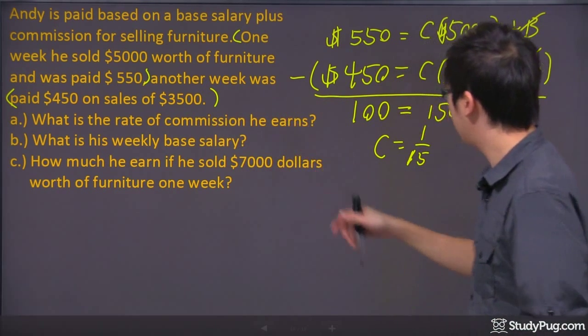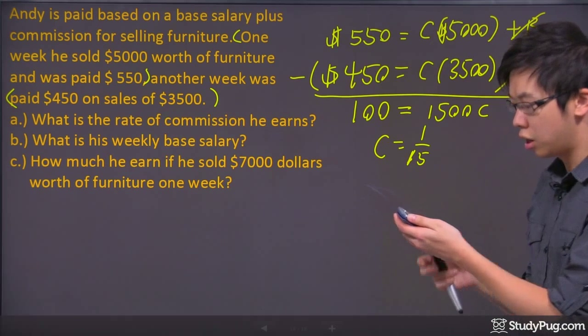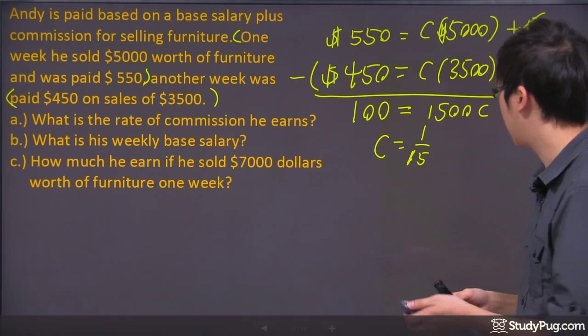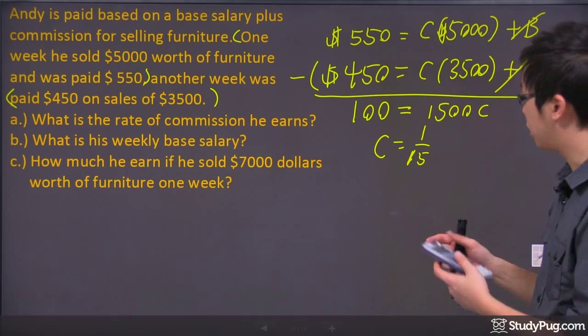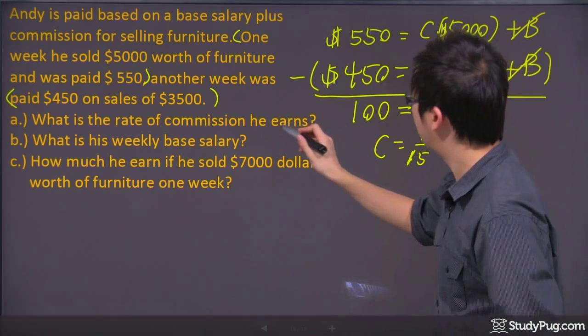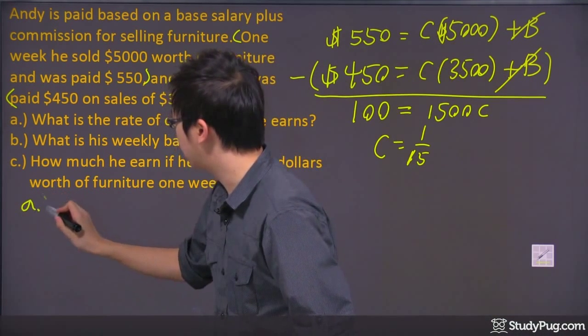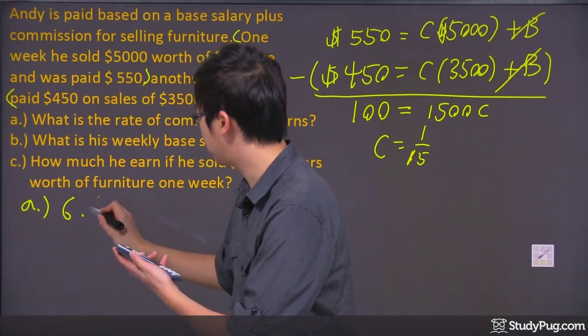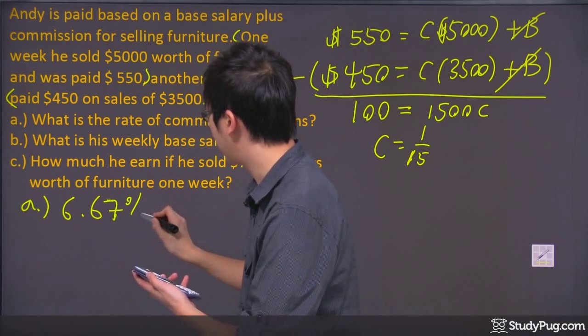What is my rate of commission? If you want to change that into decimals, it will be 0.0666. And if you times it by 100%, that would be 6.6%. Right here for A, your answer should be 6.67%.